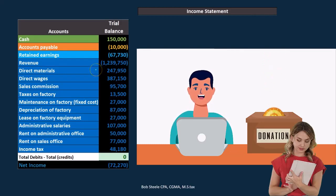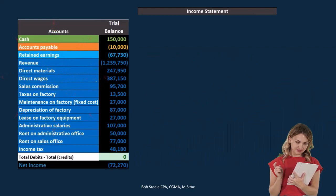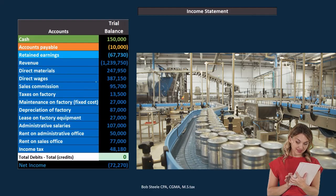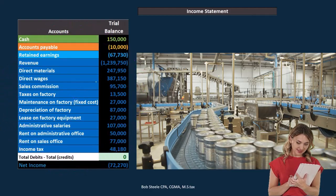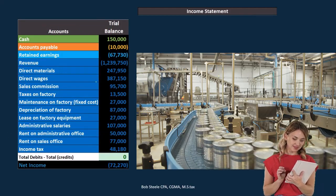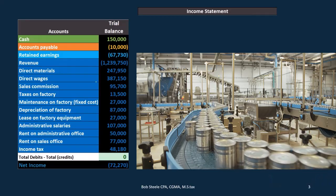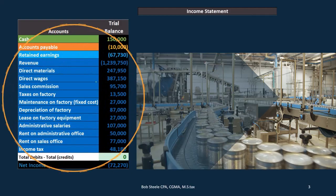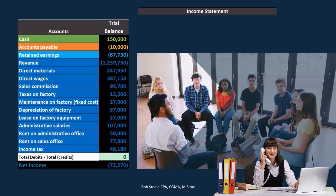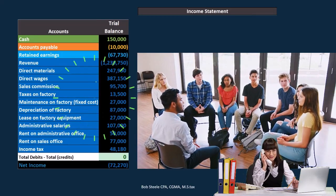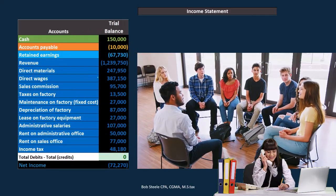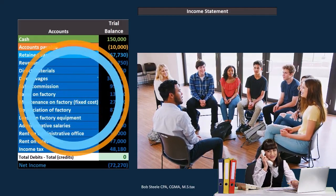We're expensing direct materials, direct wages, and factory overhead type items in real time as they happen. The assumption is that we're doing the work and selling it in the same time period, which is why these are included in cost of goods sold rather than what we'd do in a job cost system — putting things into work in process, then finished goods, and expensing when sold at a later time. The reason is to group out what's in cost of goods sold so we can see what makes up the cost to get sold.